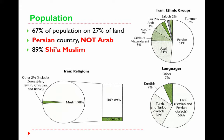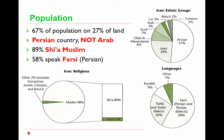89% of the population is Shia or Shiite Muslim. This is different from most of the Muslim population, which is Sunni Muslim. Iran has a concentration of Shia or Shiite Muslims. There are some other religions in Iran, but those people are going to face potential persecution and certainly won't have the same political rights. 58% of the population speaks Farsi or Persian.